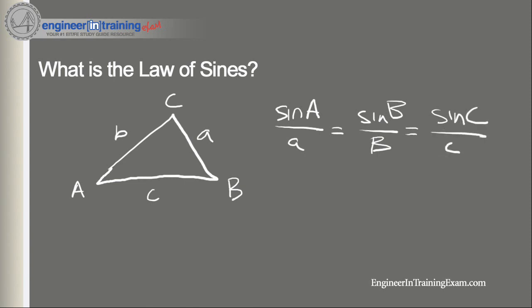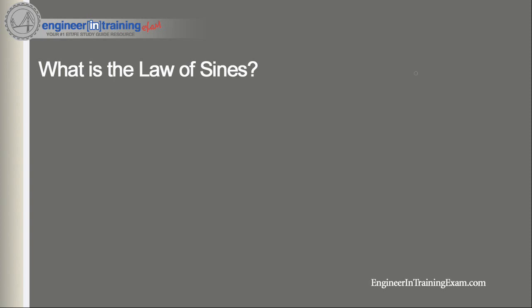So let's take a look at an example here. Let's look at the triangle. Let's say that we know this angle right here is 65 degrees, we got this angle 75 degrees, and this angle is 40 degrees.